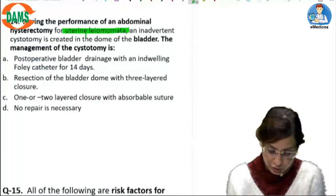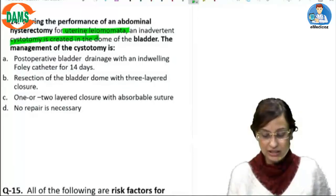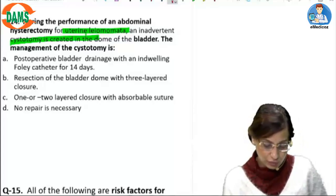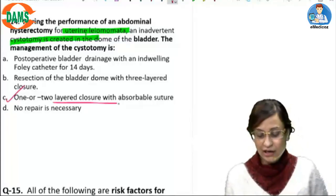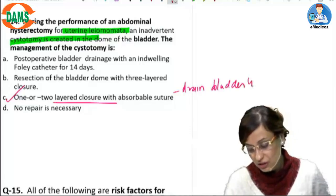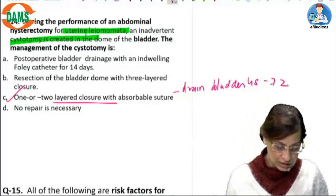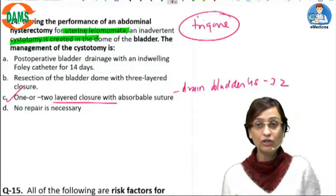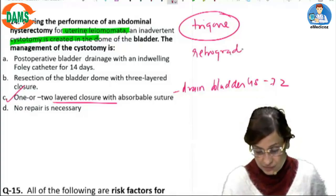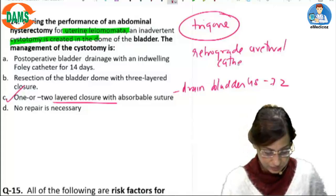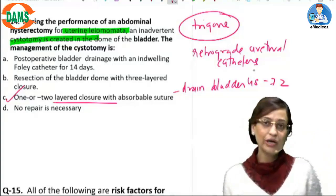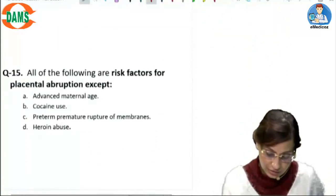During an abdominal hysterectomy for uterine leiomyoma, if an inadvertent cystotomy is created in the dome of the bladder, you perform a one- or two-layered closure with absorbable suture and then drain the bladder for about 48 to 72 hours. If the injury is near the trigone where ureteric orifices could be damaged, retrograde ureteral catheters may be needed to identify injuries, and ureteral re-implantation may sometimes be required.